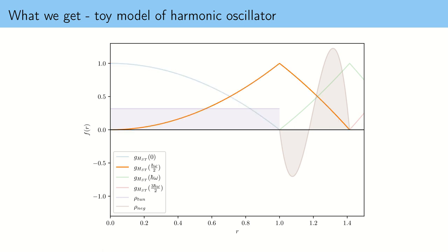The green one is the part of the phase-space spectral measure corresponding to energy ℏω/2. This is the operational equivalent of the projector on the first excited state, and we can already see from this that the spectrum of energies is going to be discrete, just like it is for the quantum harmonic oscillator. There is also another operational projector in the phase-space spectral measure.